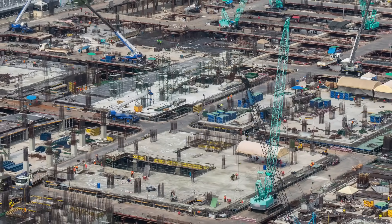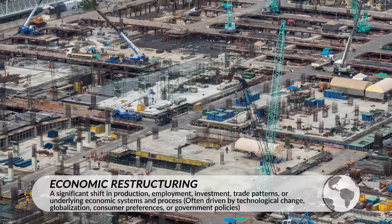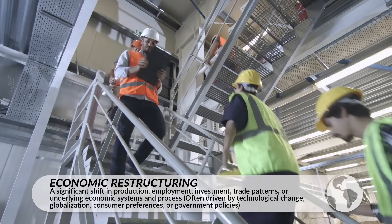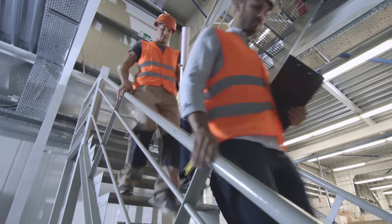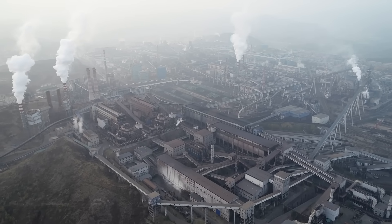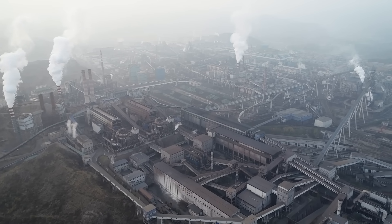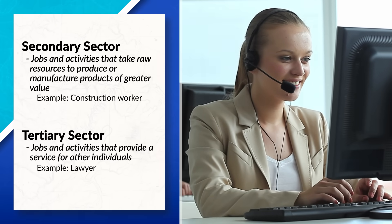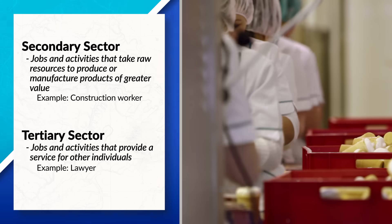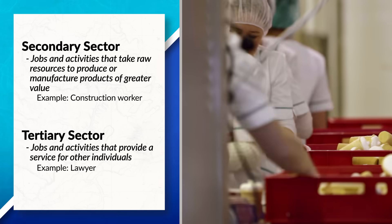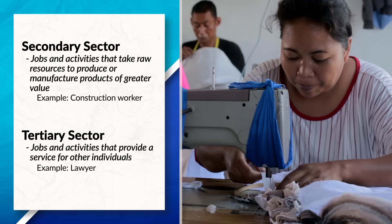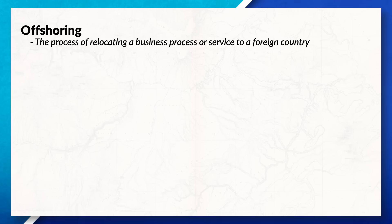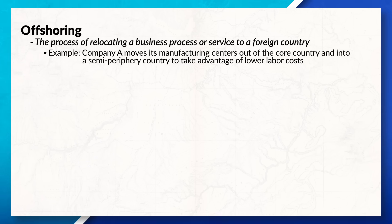Countries around the world have started to see economic restructuring occur as businesses seek to take advantage of the new global market. Today, we can see many businesses in core countries move production out of core countries and into semi-periphery and periphery countries. Core countries continue to lose jobs in the secondary sector and have started to lose jobs in the tertiary sector as well. This process of relocating a business's services or processes to a foreign country is known as offshoring.